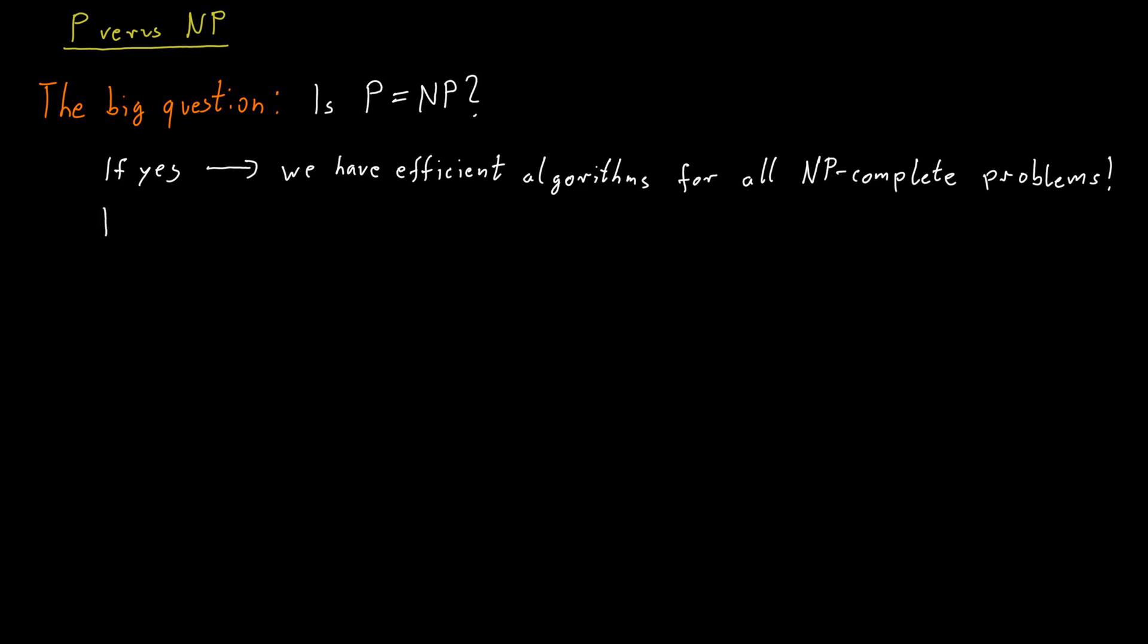On the other hand, if P is not equal to NP, then it would follow that no efficient algorithms are possible for any NP-complete problem. So all the NP-complete problems are really hard problems in the sense that they cannot be solved quickly. This would also be a very important result, of course, because it would somehow validate our inability for all these years to come up with fast algorithms for these problems.